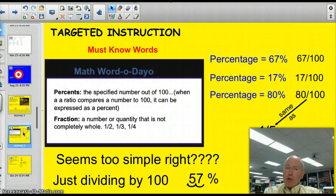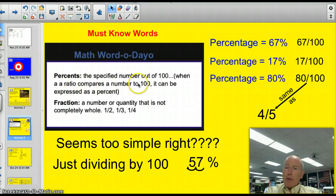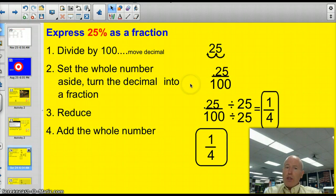Let's take a look at some must-know vocabulary words. This is all review, but here again, percents. This is the specified number out of 100, like we had 67 out of 100, 67%. And a fraction is a number or a quantity that's not completely whole, like 1 half and 1 third. So take a look at these percentages. Here's the one we had. 67% as a fraction is 67 out of 100. 17% is simply 17 out of 100. And 80%, that's 80 out of 100. But don't forget, sometimes we have to reduce that fraction if it's not in simplest form. So if we divide by 20, we'll get 4 fifths. Seems too simple, right? Just dividing by 100? Well, there are a couple little tricks you have to watch out for. And I think those are best learned by working through some problems.